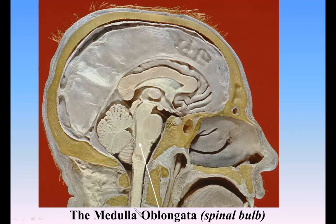The medulla oblongata, or spinal bulb, extends from the lower margin of the pons to a plane passing transversely below the pyramidal decussation and above the first pair of cervical nerves. This plane corresponds with the upper border of the atlas behind and the middle of the odontoid process of the axis in front. At this level, the medulla oblongata is continuous with the medulla spinalis. Its anterior surface is separated from the basilar part of the occipital bone and the upper part of the odontoid process by the membranes of the brain and the occipital axial ligaments.